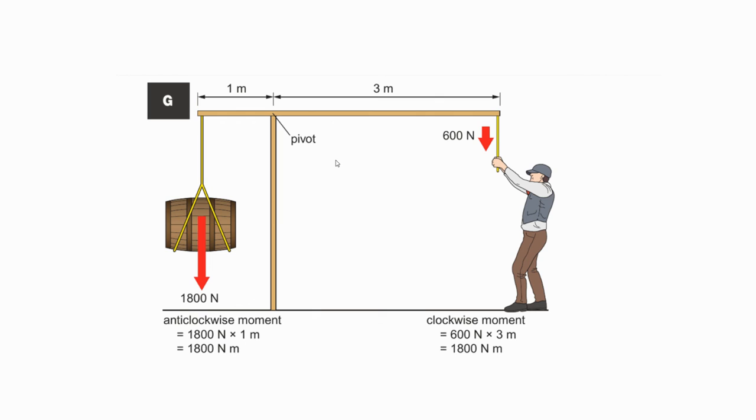And when moments either side of a pivot are equal to each other, that is, the anticlockwise moment equals the clockwise moment, then we know that the forces or the moments are balanced and you have a balanced scenario.